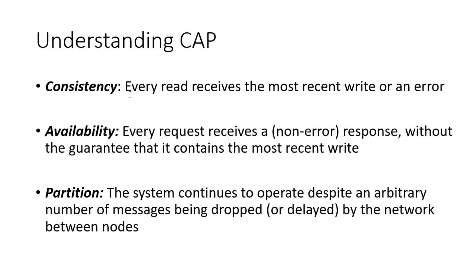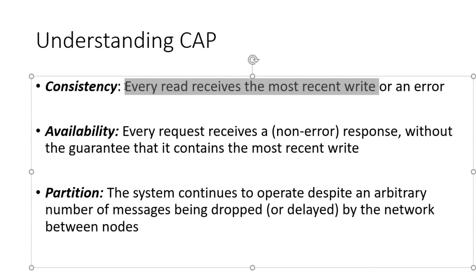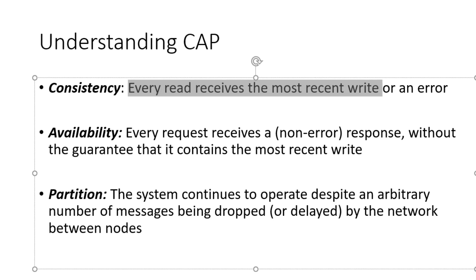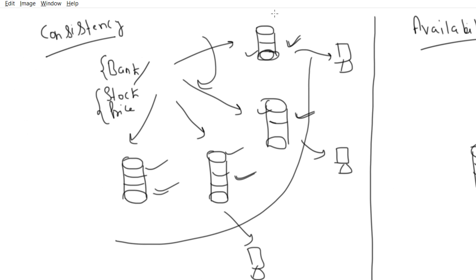Consistency says that every read receives the most recent write or an error. When we do any write, whatever the node, all users should receive the most recent write or an error.